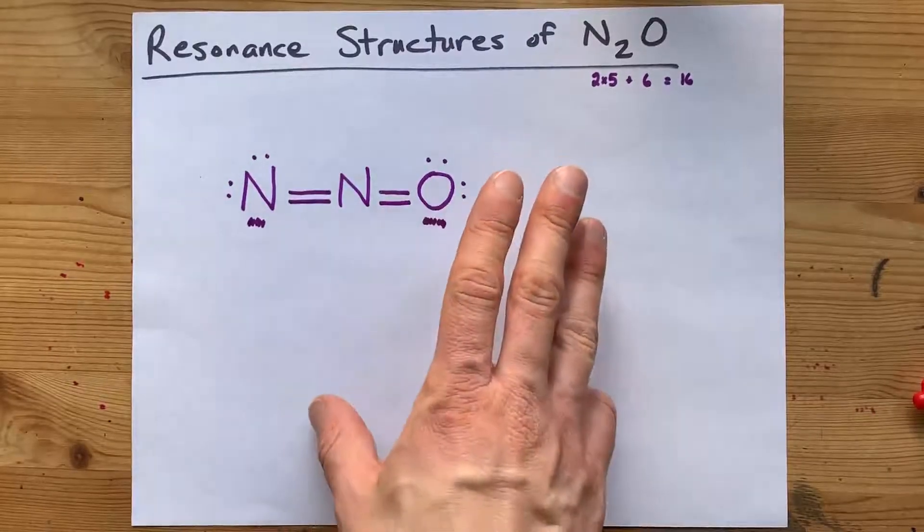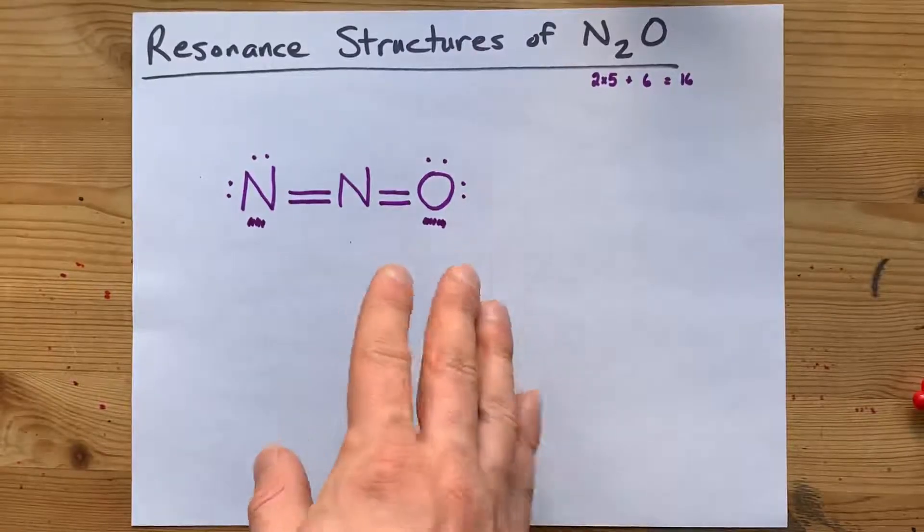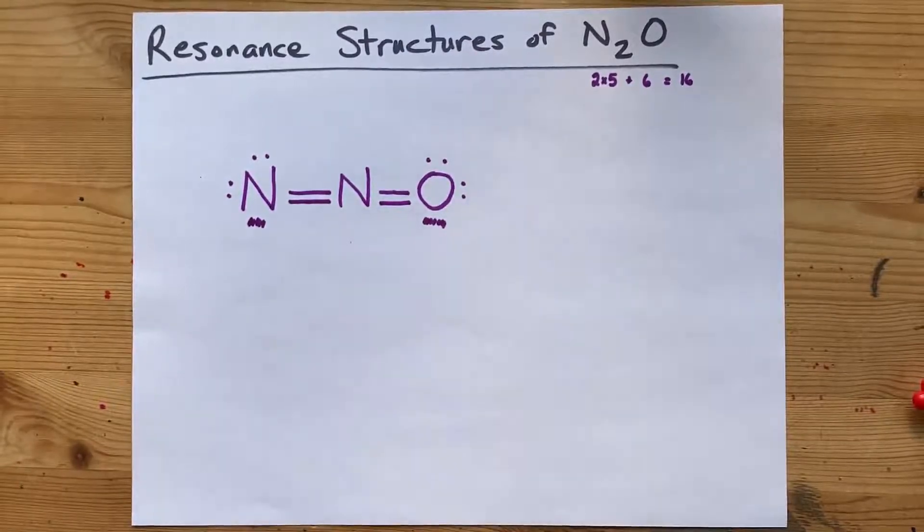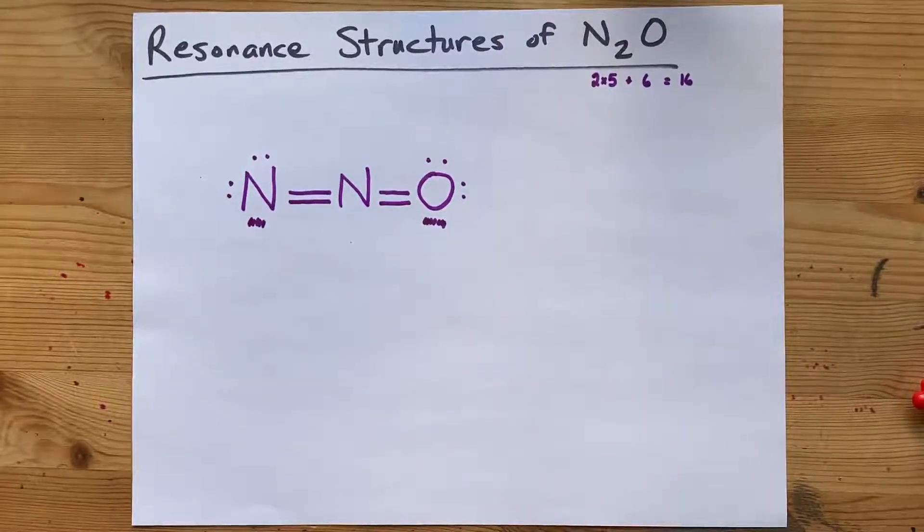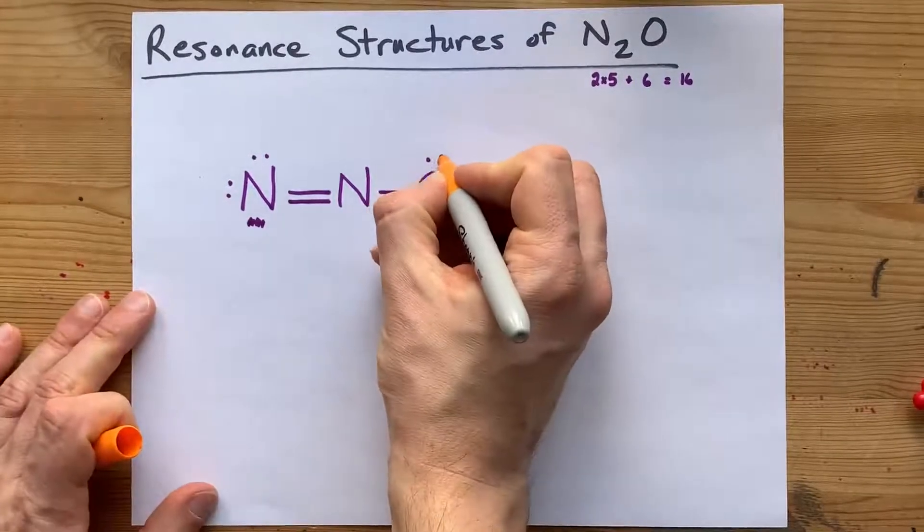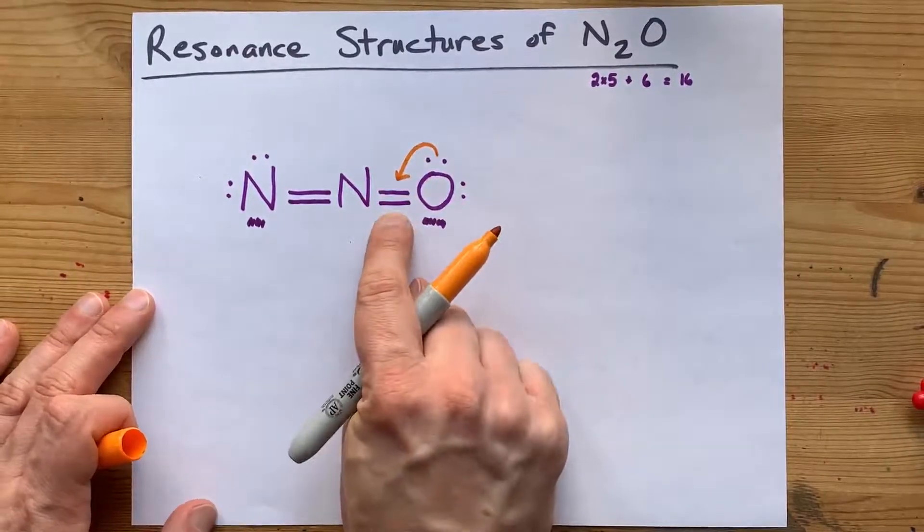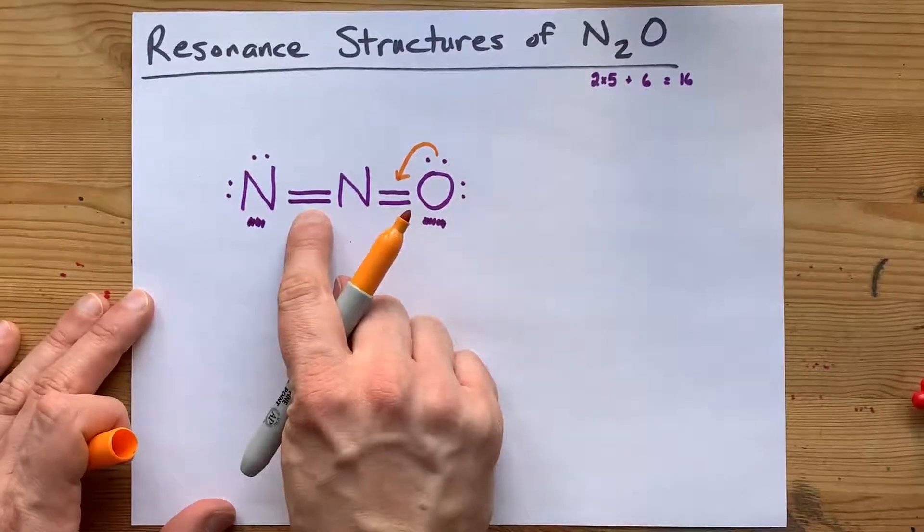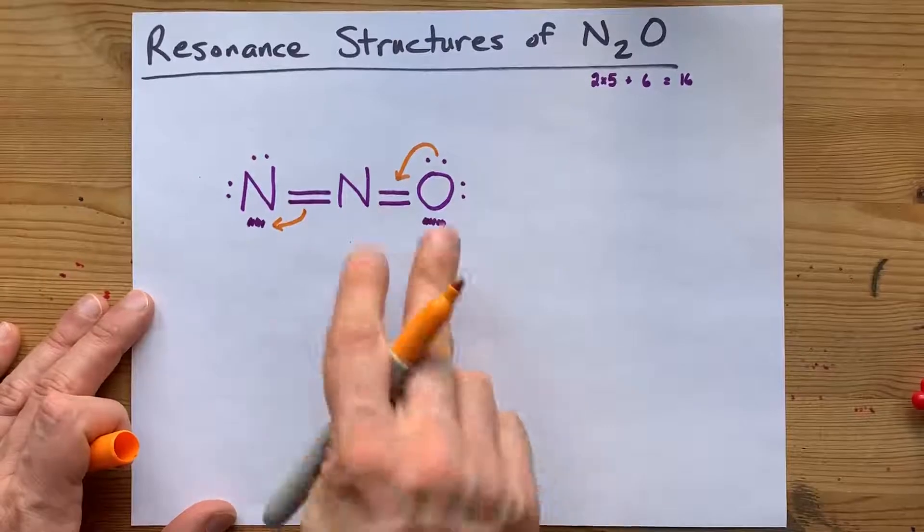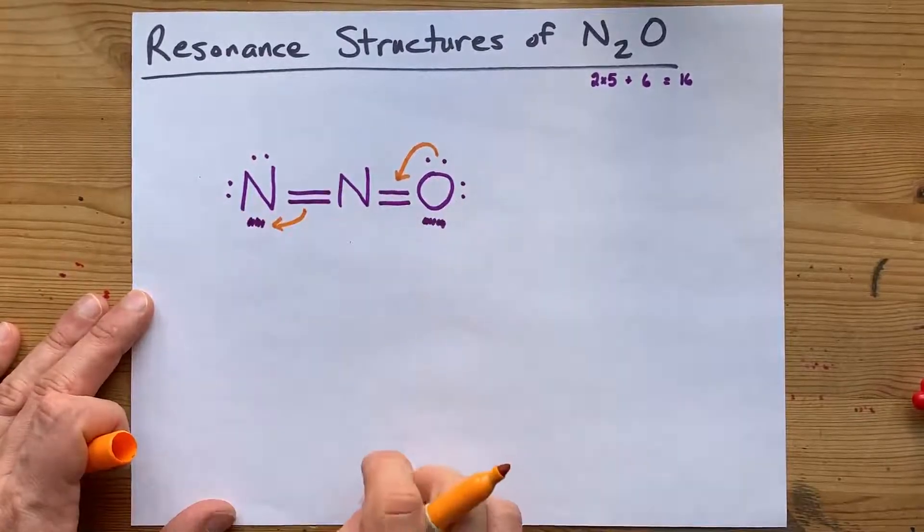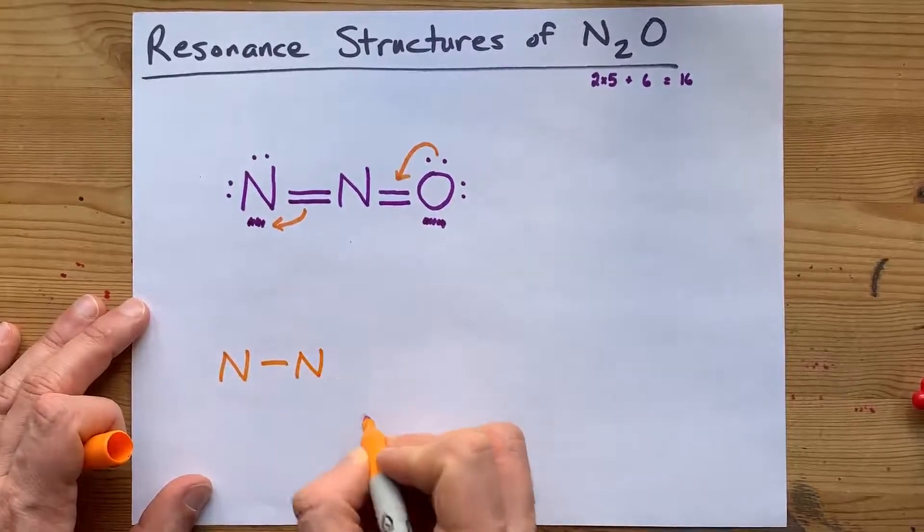Now, the way you draw resonance structures is to find alternate Lewis structures that also seem valid. Really, the only option that I'm seeing here is that this pair of electrons could form a triple bond with nitrogen. As long as this pair of electrons gets pushed back to this nitrogen, you can kind of see the flow of electrons here.